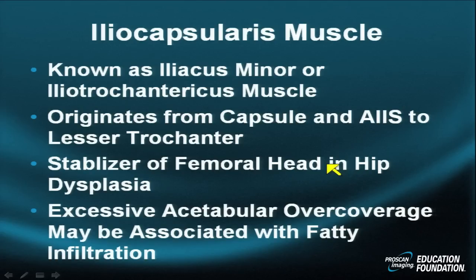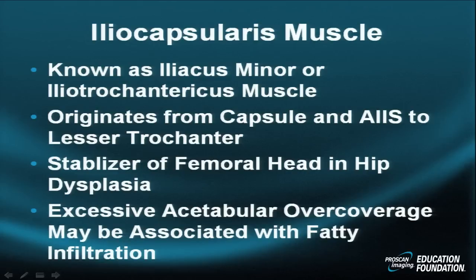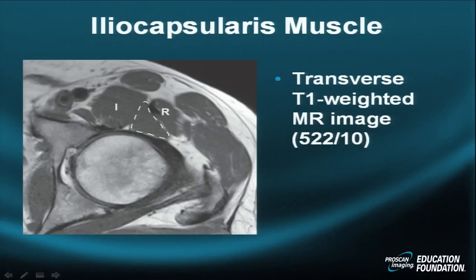An interesting structure is the iliocapsularis muscle, also known as the iliacus minor or iliotrochantericus muscle. It originates from the capsule and the anterior inferior iliac spine and inserts on the lesser trochanter, serving as a stabilizer of the femoral head. In hip dysplasia, excessive acetabular coverage may be associated with fatty infiltration. In femoroacetabular impingement type 2, an axial T1-weighted image demonstrates the iliopsoas muscle, rectus femoris muscle and tendon, and between them the triangular-shaped iliocapsularis muscle.